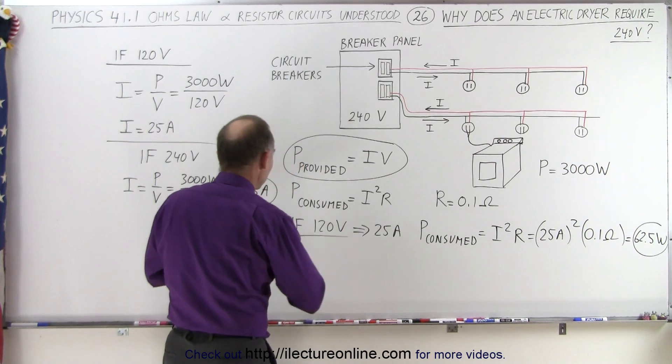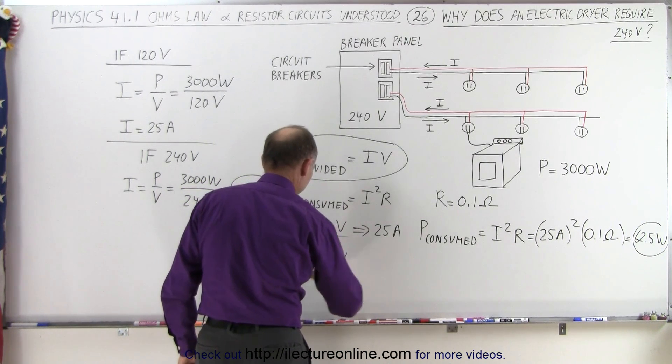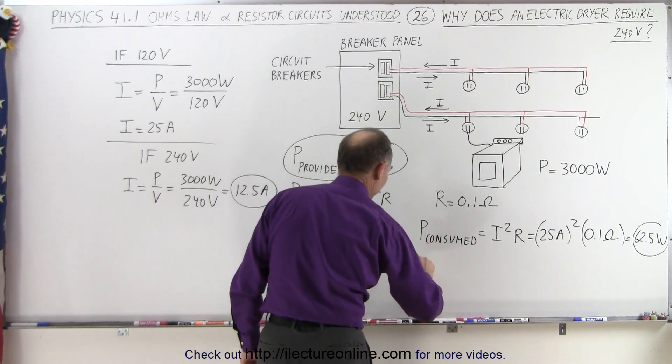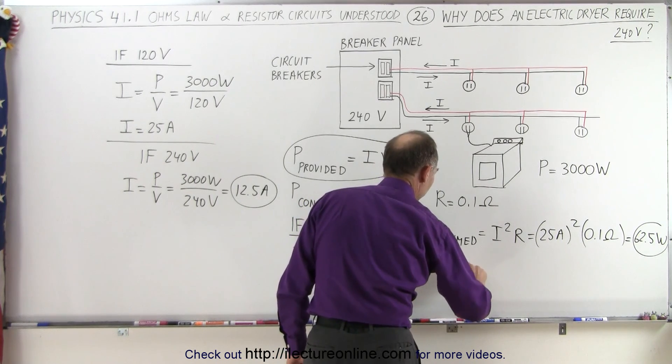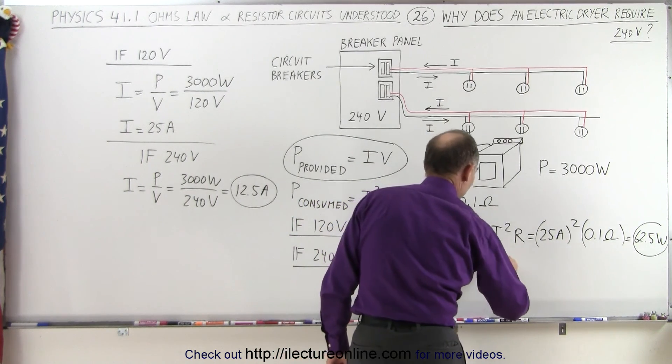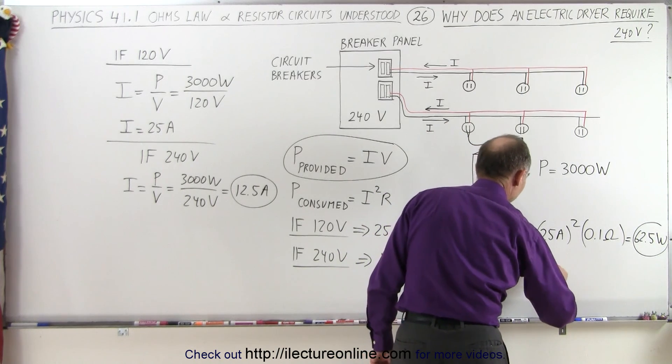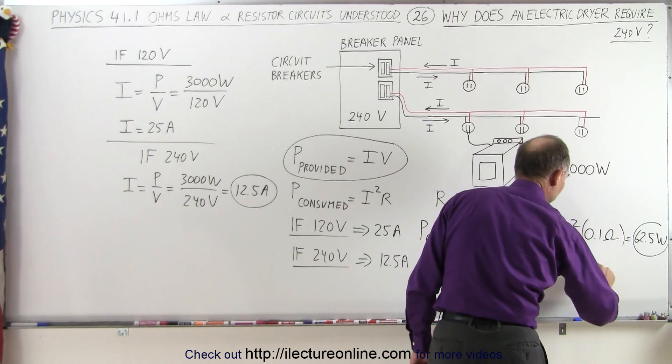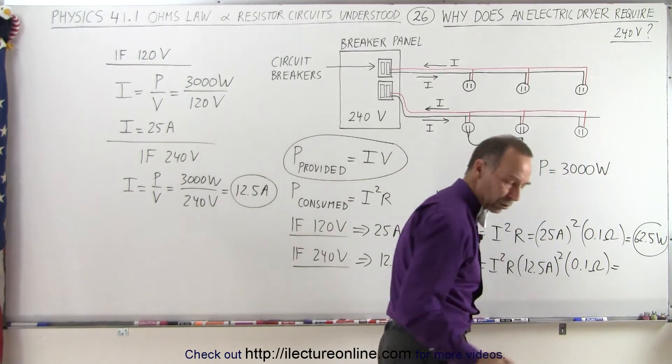So if instead you have a 240 volt circuit, if you have 240 volts, then notice you only have 12.5 amps of current. And then the power consumed would be quite a bit less by those same wires. So that would be equal to I squared R, but in this case it's only 12.5 amps that we have to square, times the same 0.1 ohm resistor. And notice now we have a current that's only one quarter as much.